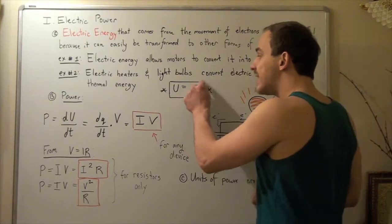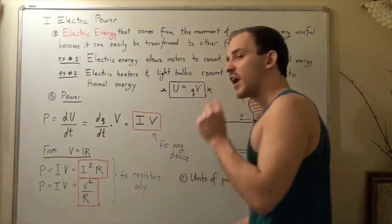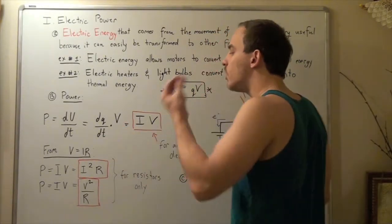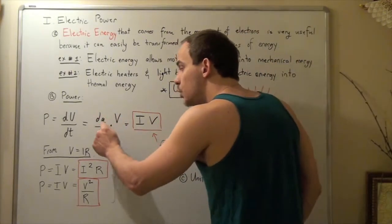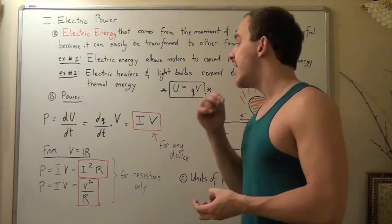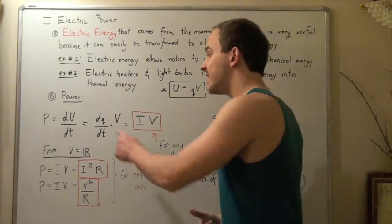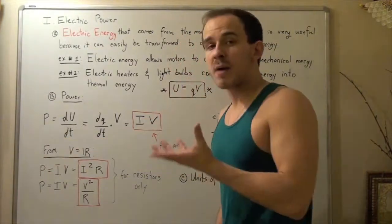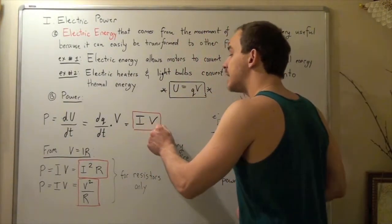So, if we take this guy and we plug it into our U, we get dq, or a very small change in q, divided by a very small change in t, multiplied by our voltage. And remember, dq over dt is simply the change in charge over the change in time. And that's simply our current, or flow of electrons. So we replace this guy with I, and we get that our power, or electric power, for any form of device is given by I times V.